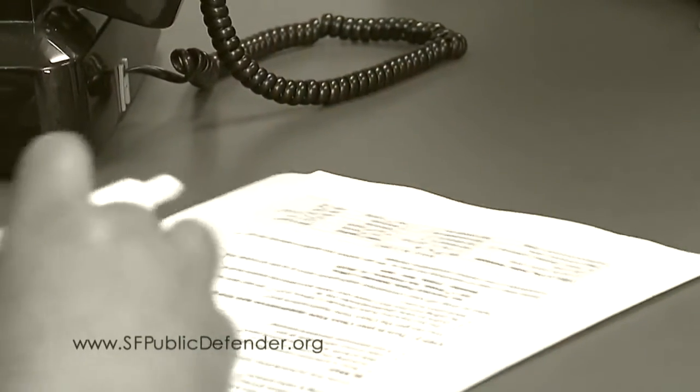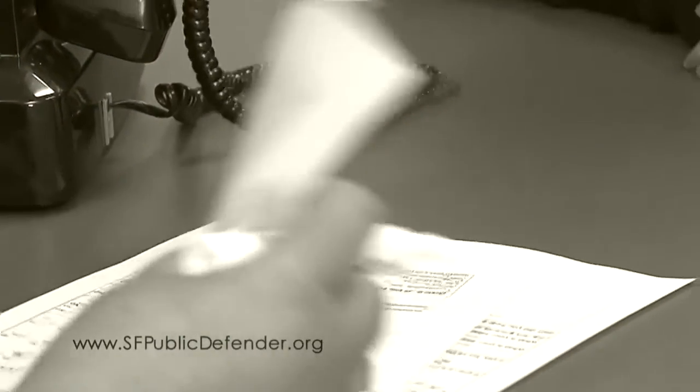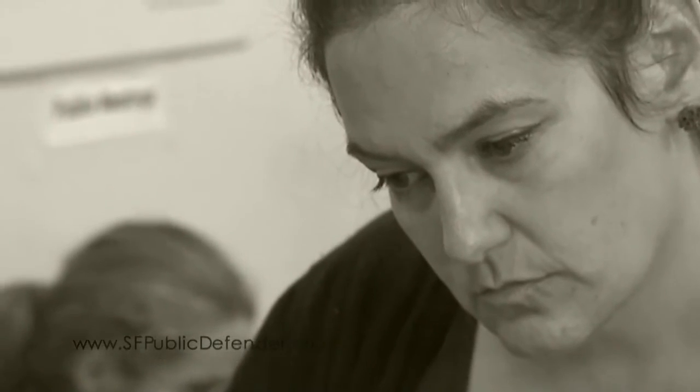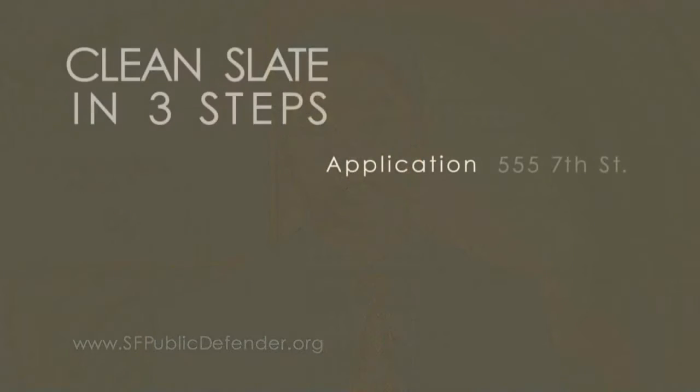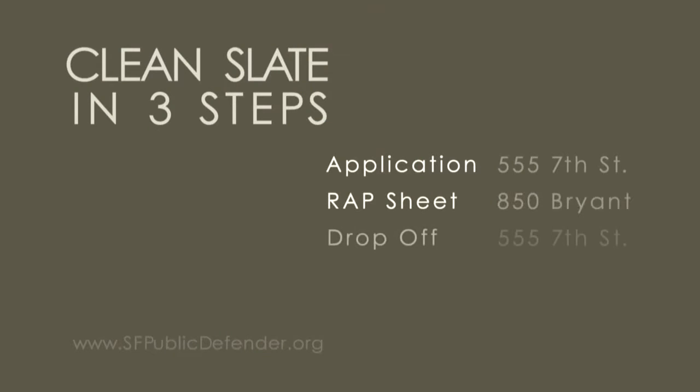Finally, you will return your rap sheet and completed application to the Public Defender's office front desk. Once we receive your application, you will receive a letter from us in two to three weeks explaining the next steps of the process. Let's review the three steps: Step one, fill out the Clean Slate application. Step two, obtain your rap sheet. Step three, deliver your application and rap sheet to the Public Defender's office.